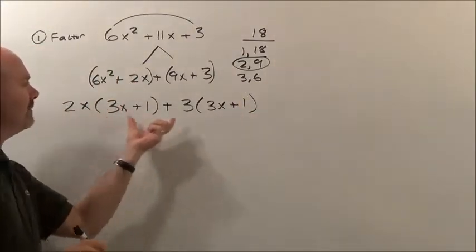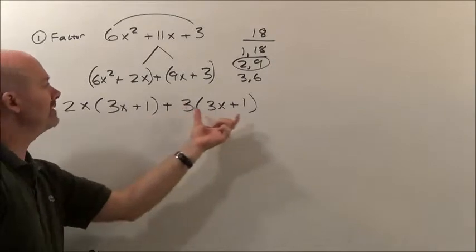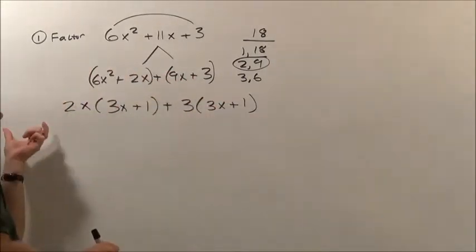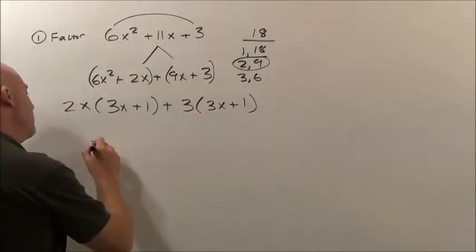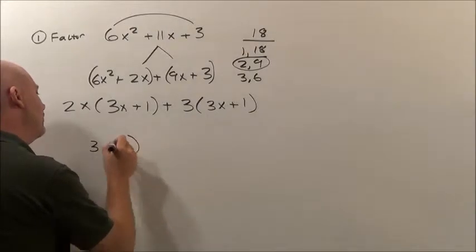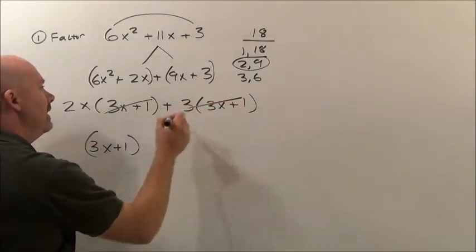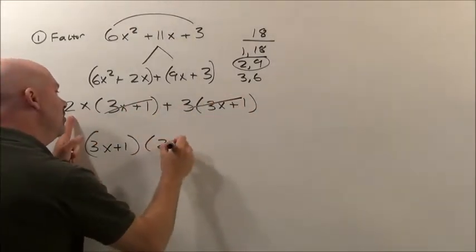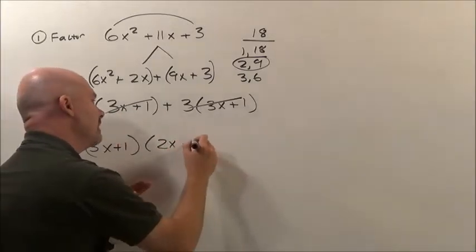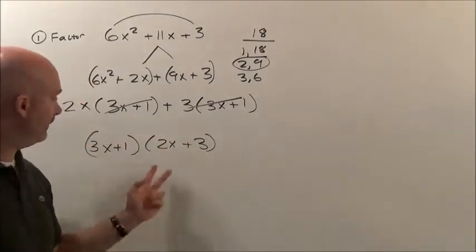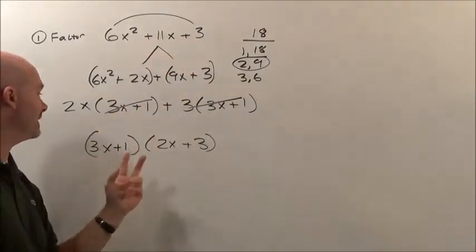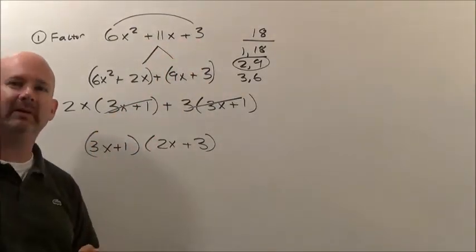Now notice what they both have, they have a 3x + 1. Well, technically what we're now going to do is factor that out front. So if we pull the 3x + 1 out, it's gone here and gone here, and you're left behind with 2x + 3. And you've actually just factored this 6x² + 11x + 3 down to what it would be.